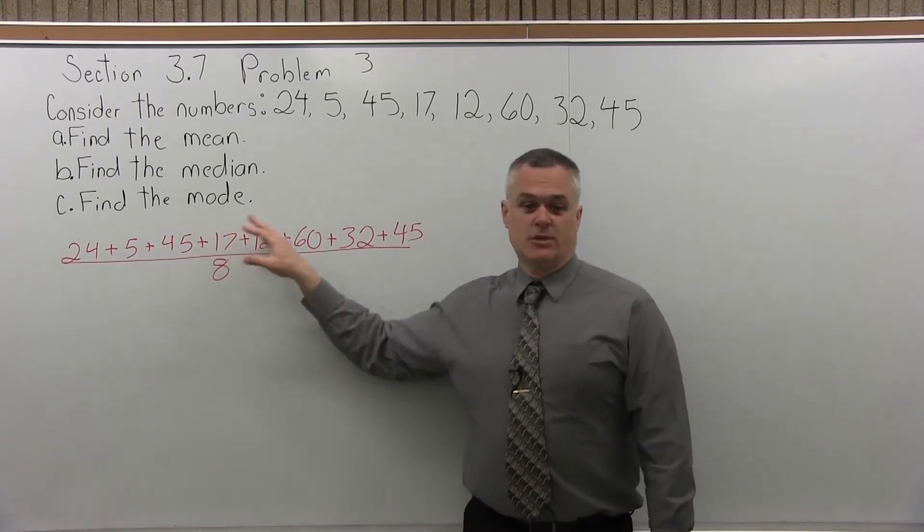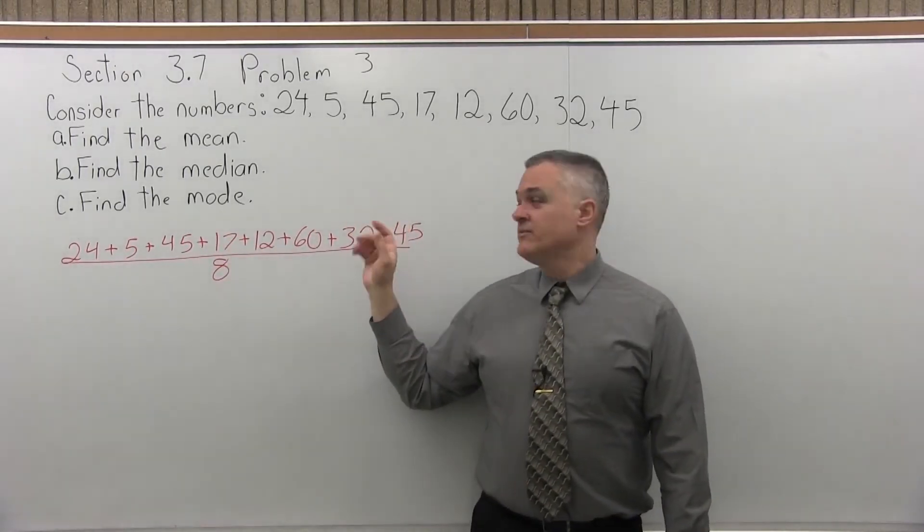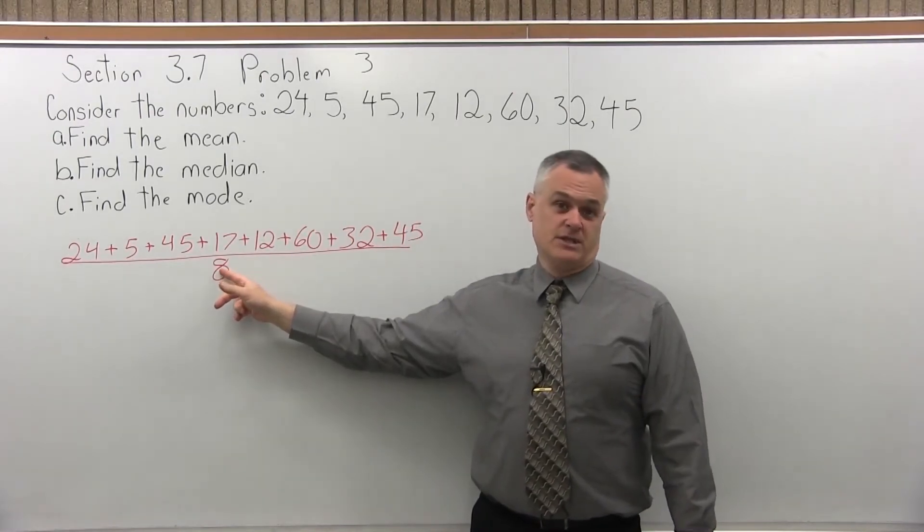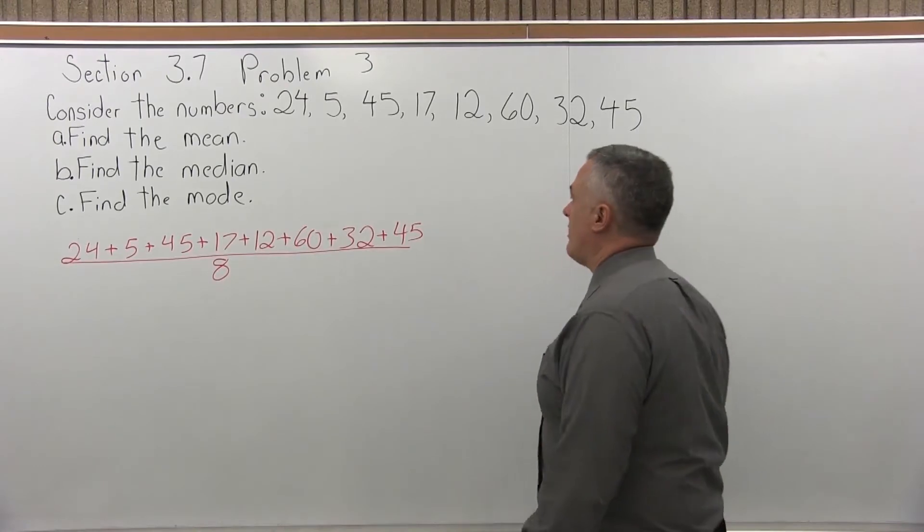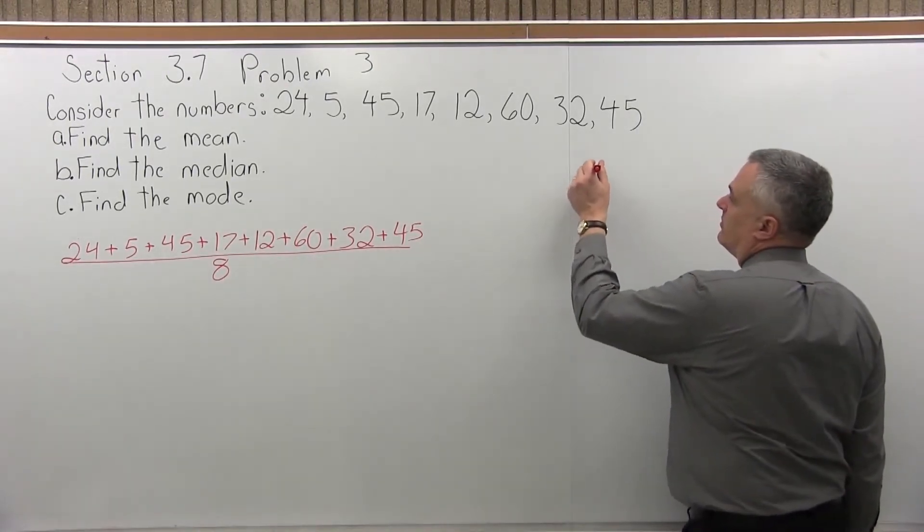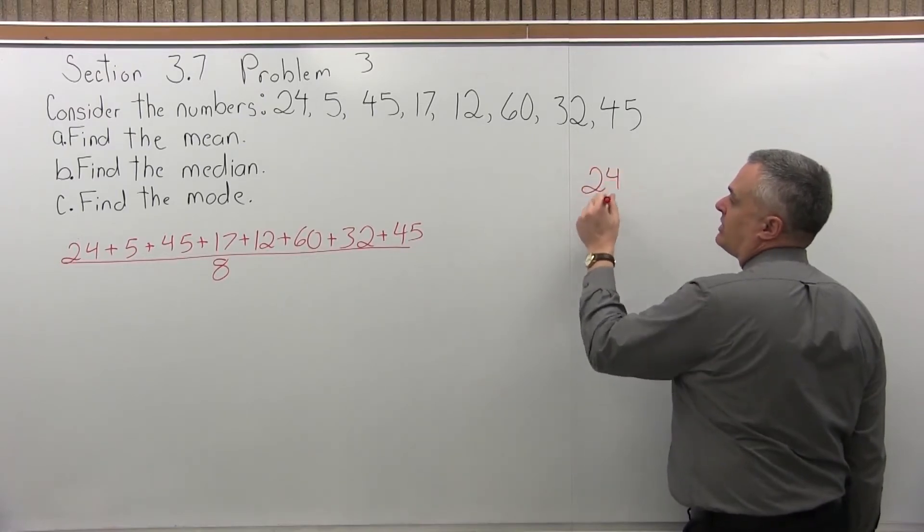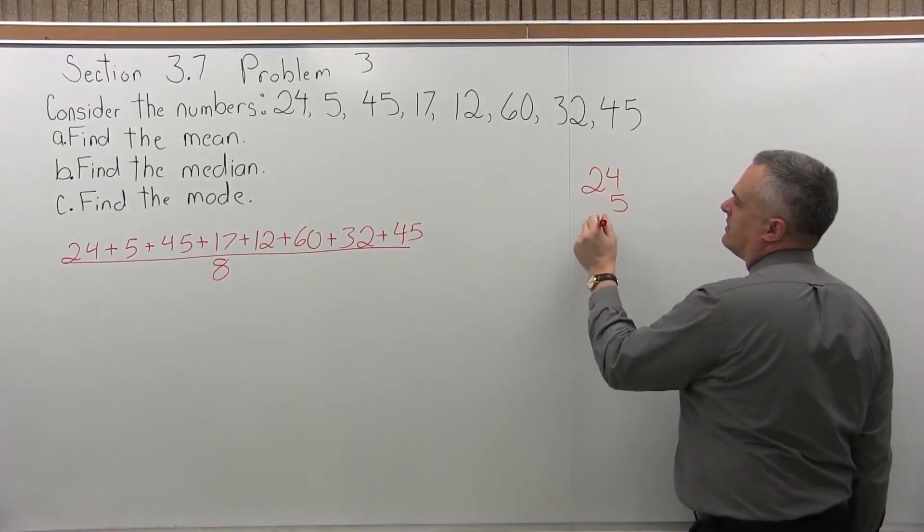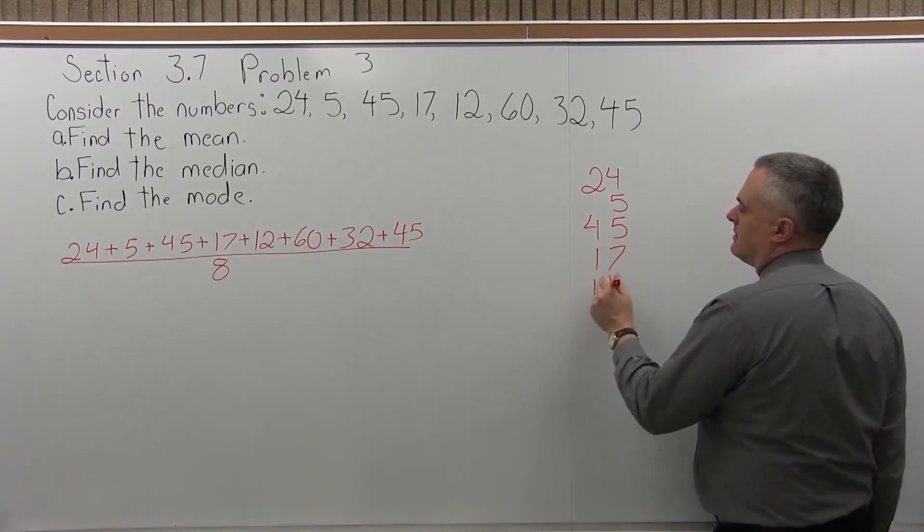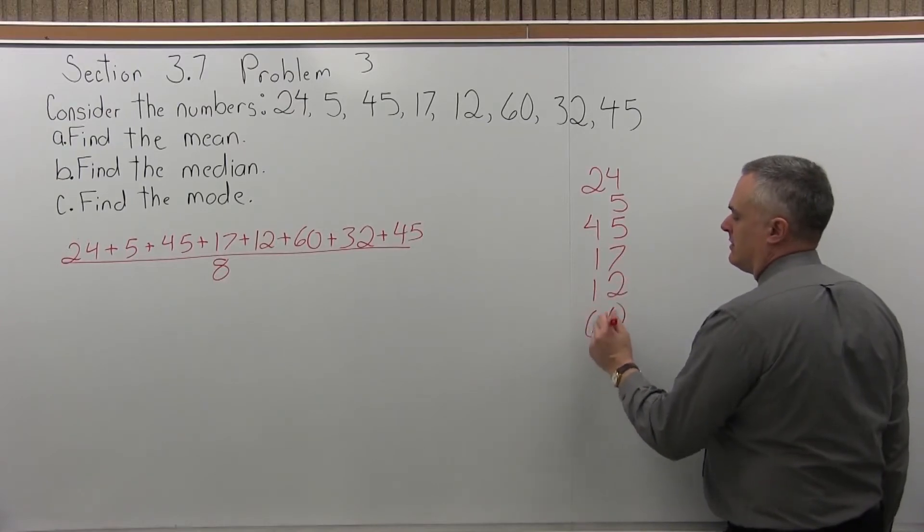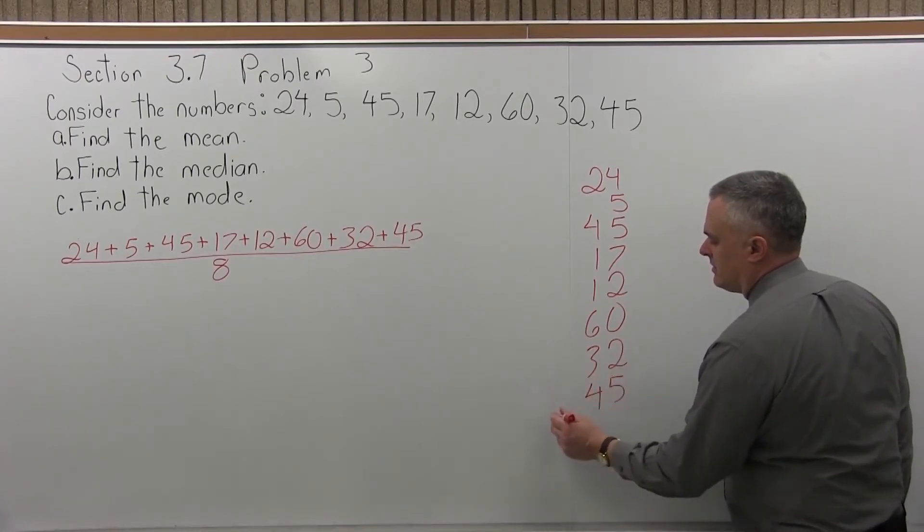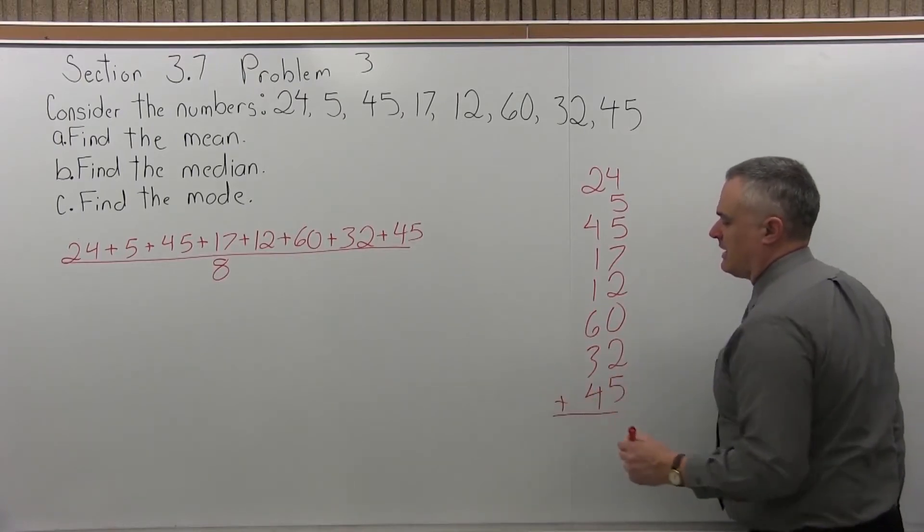Now if you have a calculator, you can just enter them in the calculator, add them together, get the total for the top of your fraction, then divide it by the bottom which is 8. Now, where we can't always use a calculator, we can still add it up by hand. So to add by hand, I prefer to write vertically. So I'll write the numbers in that list going vertically and add them together.